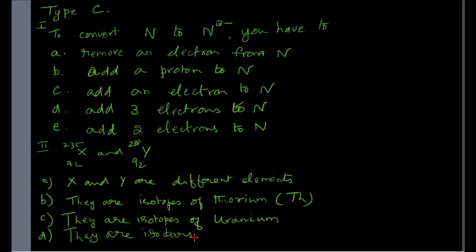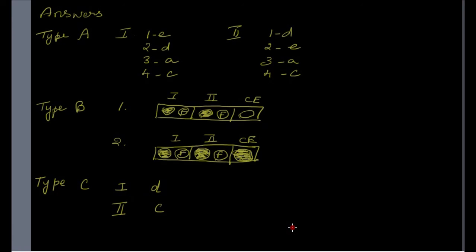Type C is the usual multiple choice type of question. There is an incomplete statement on top to be completed by choosing one of the given choices. The first question: 'To convert nitrogen to N3−, you...' — N3− carries three negative charges in excess, which is equivalent to adding three electrons. So choice D, 'add three electrons to nitrogen,' is correct. The answers are given on screen for you to verify. The questions are straightforward and based on facts.